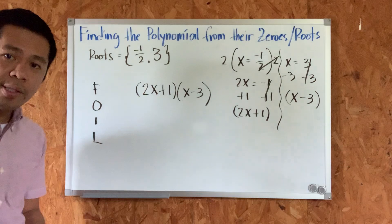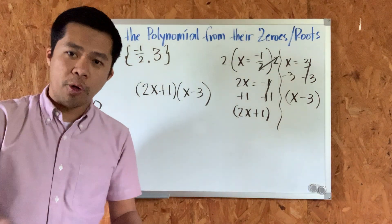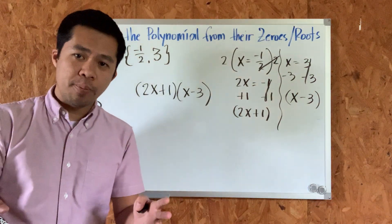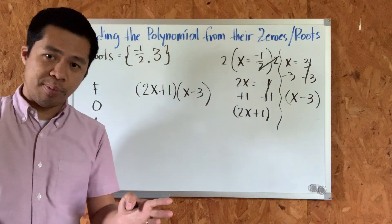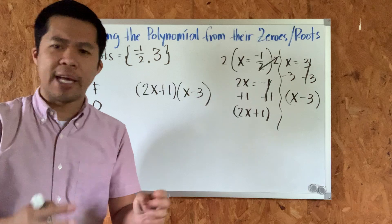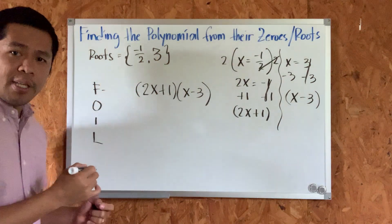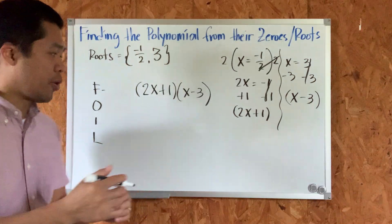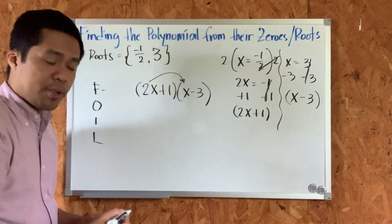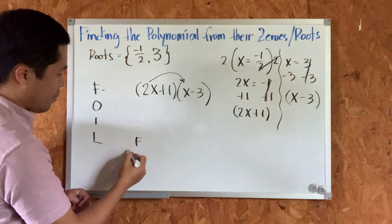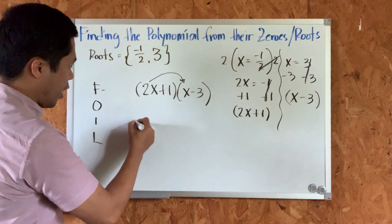FOIL means: F — first terms, O — outer terms, I — inner terms, and L — last terms. Let's multiply the first terms first. The first terms are two x and x, and the product of two x and x is two x squared.